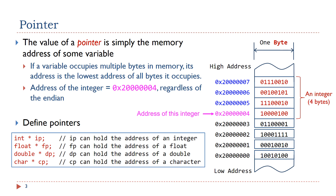What is the basic syntax to define pointers in C? The basic syntax is: type asterisk pointer_name. Here are four examples. These examples define a pointer which can hold the address of the memory location that contains an integer, a float, a double, and a character, respectively.